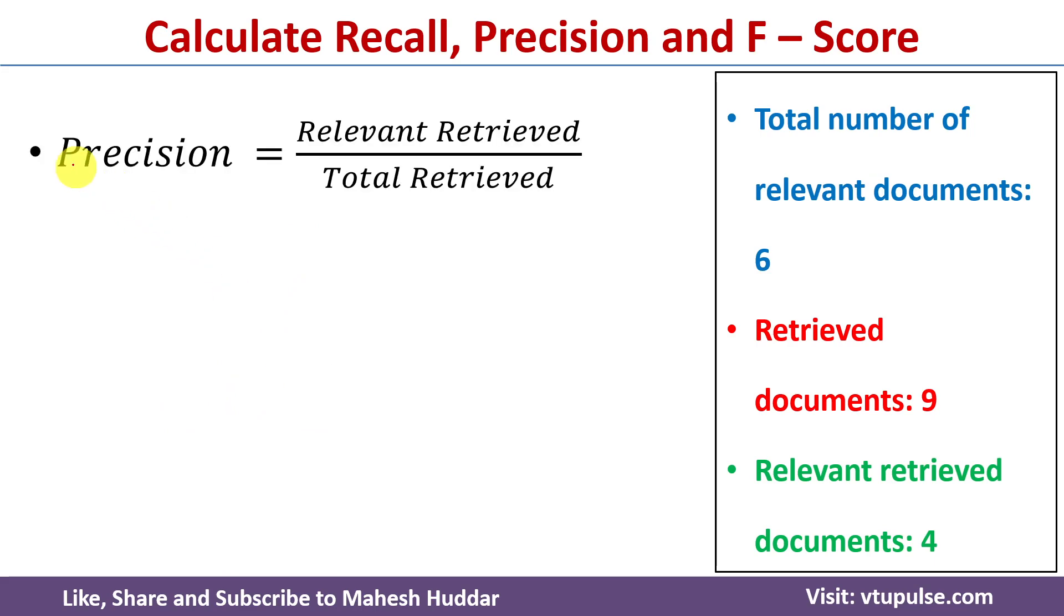Now we will find the precision, so we will use the following formula that is precision equals number of relevant retrieved documents divided by total retrieved documents. So the number of relevant retrieved documents is 4, total retrieved documents are 9, so we get precision as 0.444.